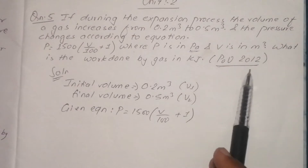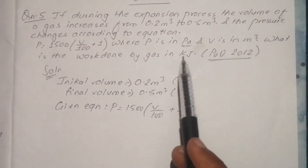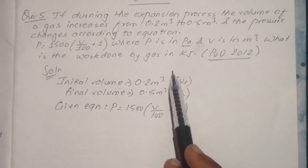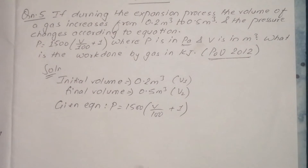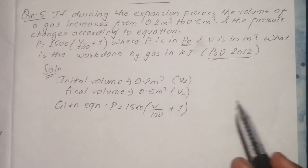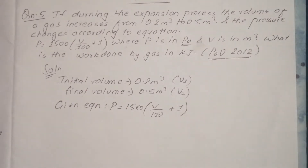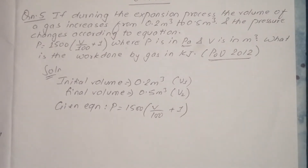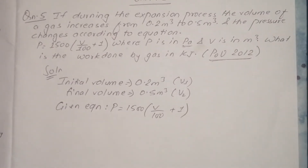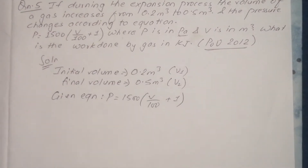B is in N per meter squared. What is the work done by the gas, in kilojoules? Let us see how to find the work done by the gas.